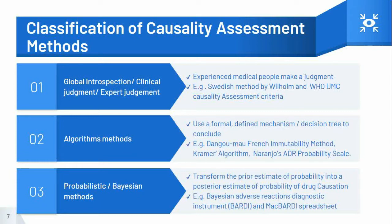Probabilistic methods, also known as Bayesian approaches, use specific findings in a case to transform a prior estimate of probability into a posterior estimate of probability of drug causation. The prior probability is based on epidemiological information or extrinsic factors, and the posterior probability combines this background information with evidence from the individual case — both extrinsic and intrinsic factors — to estimate the strength of the causal relationship. Generally, these methods require more data than is available, hence they are not yet practical.